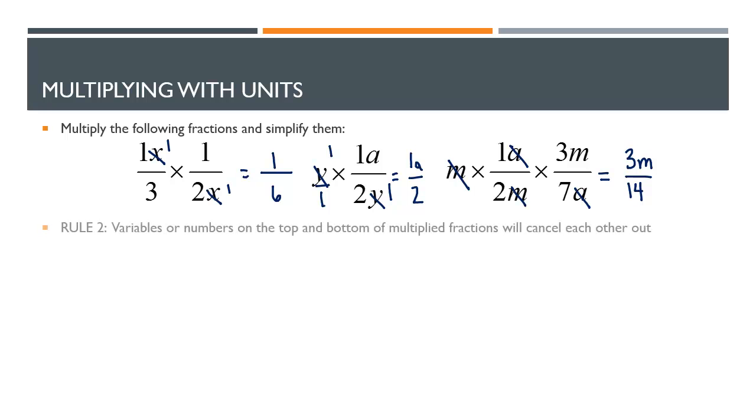So here's rule number 2: variables or numbers on the top and bottom of multiplied fractions can cancel out.